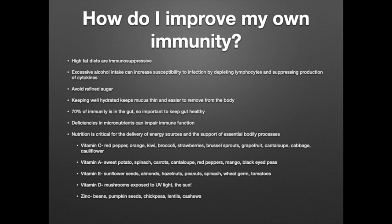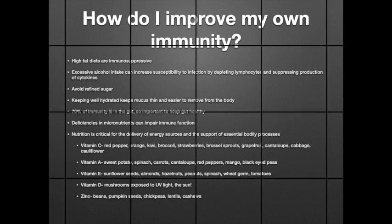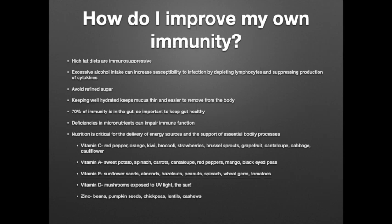So how can you improve your own immunity? A plant-based diet can help prevent some chronic medical problems. A plant-based diet is also low in fat, and high-fat diets are immunosuppressive. Nutrition is critical for the delivery of energy sources and the support of essential bodily processes. Vitamin C, vitamin A, vitamin E, and vitamin D — which you can obtain from various plant sources — are critical micronutrients. Deficiencies in these micronutrients can impair immune function. It's also important to keep your gut healthy — 70% of your immunity is in your gut. Keep well hydrated because this keeps the mucus thin and it's easier to remove from your body. Avoid refined sugar and excess alcohol intake, as excess alcohol can increase susceptibility to infection by depleting lymphocytes and suppressing production of cytokines.